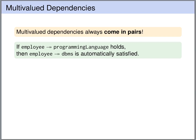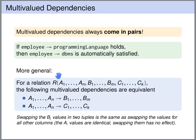A multivalued dependency always comes in pairs. So if we have a multivalued dependency from employee to set of programming languages, then we automatically also have a multivalued dependency from employee to set of database management systems — to all other columns in the table. In general: if R is a relation with attributes A1 to AN, B1 to BM, and C1 to CK, then the following multivalued dependencies are equivalent — from A to B is equivalent to from A to C.